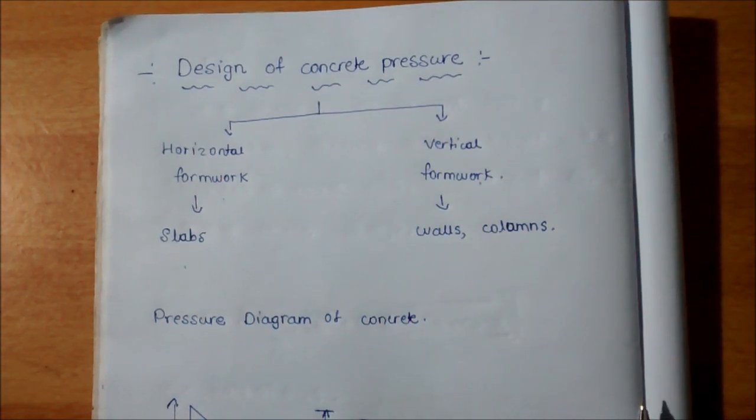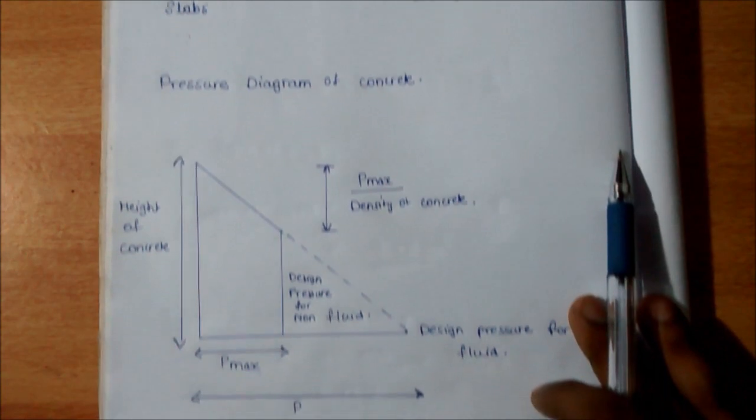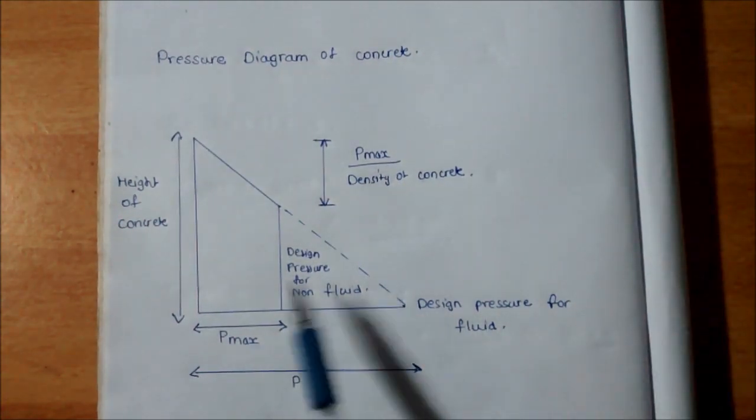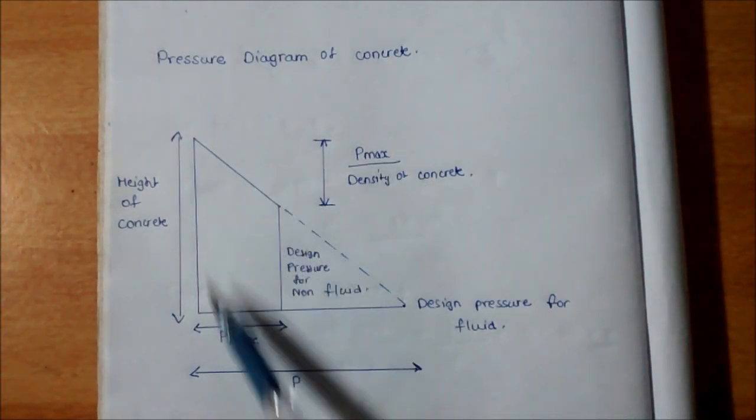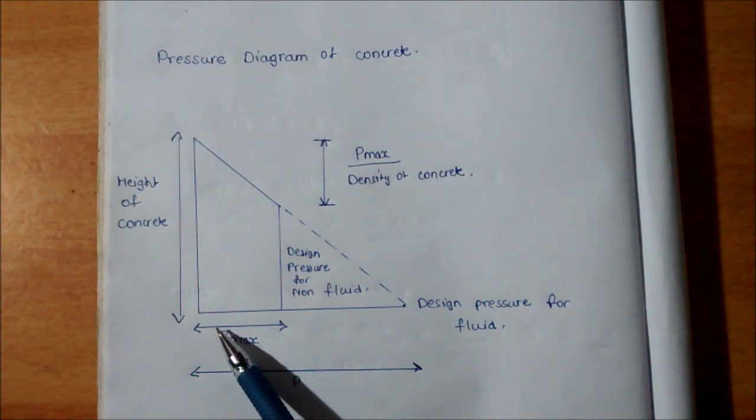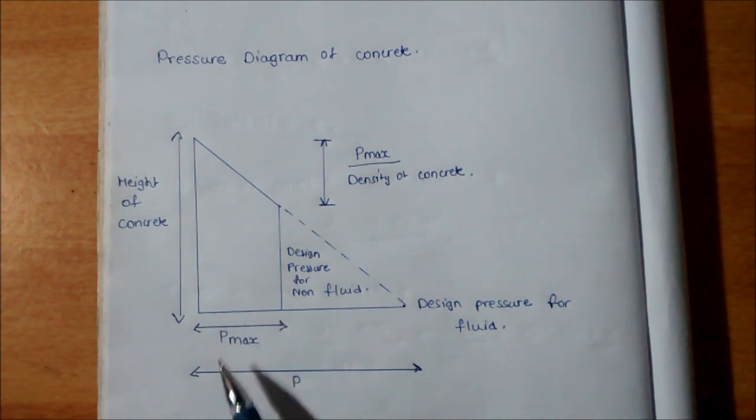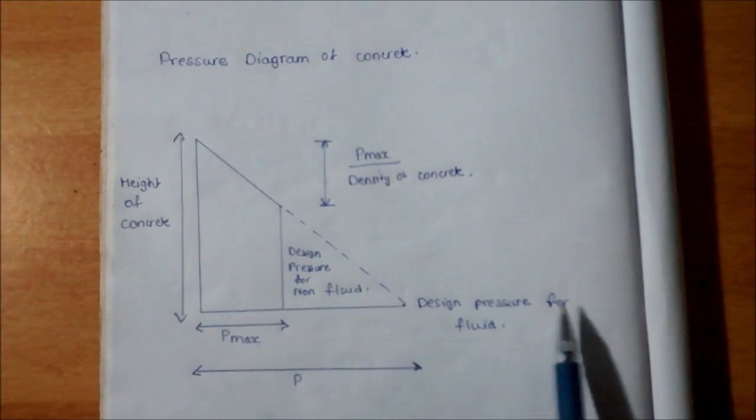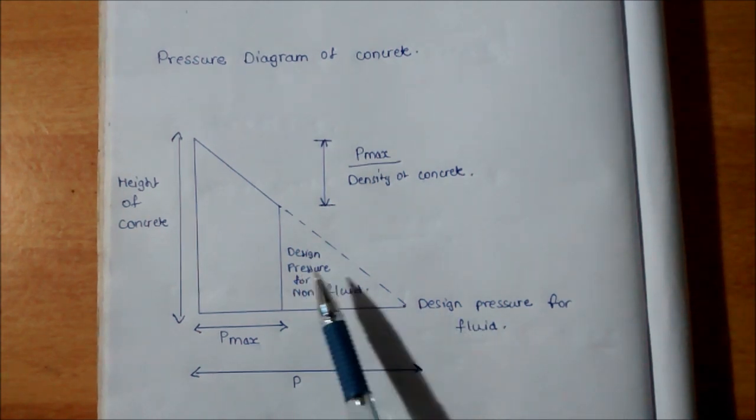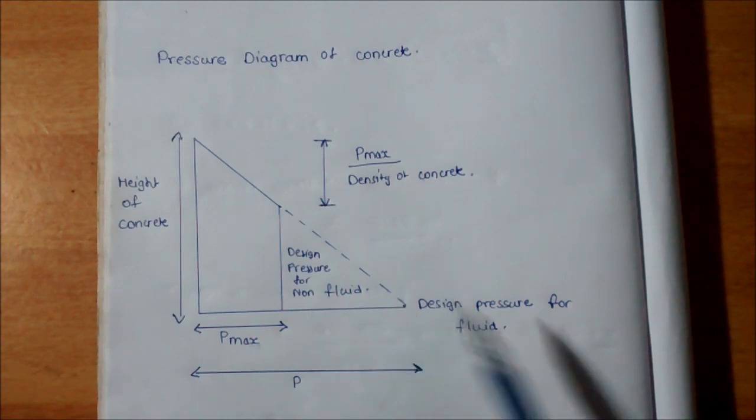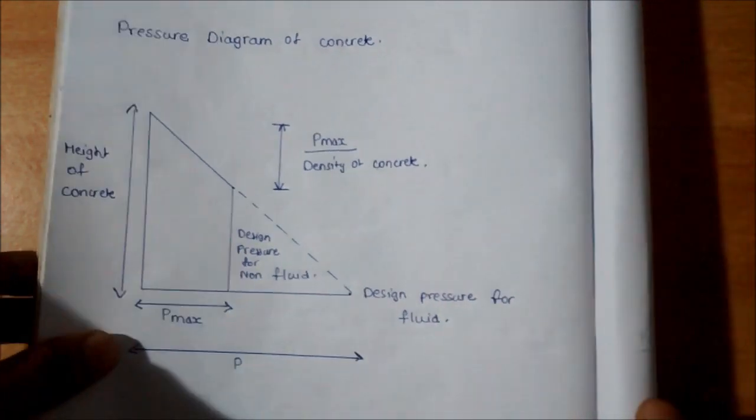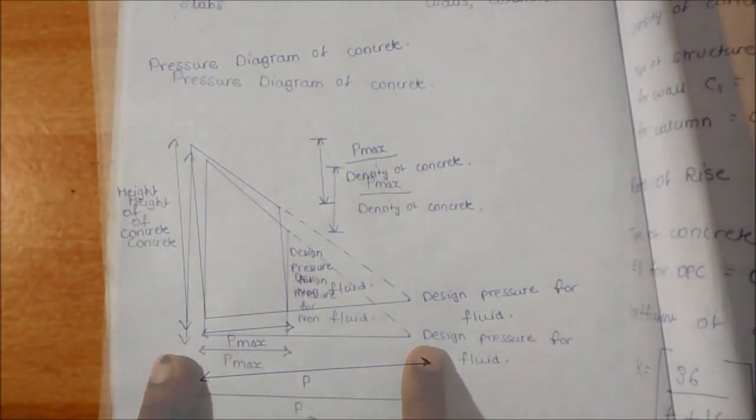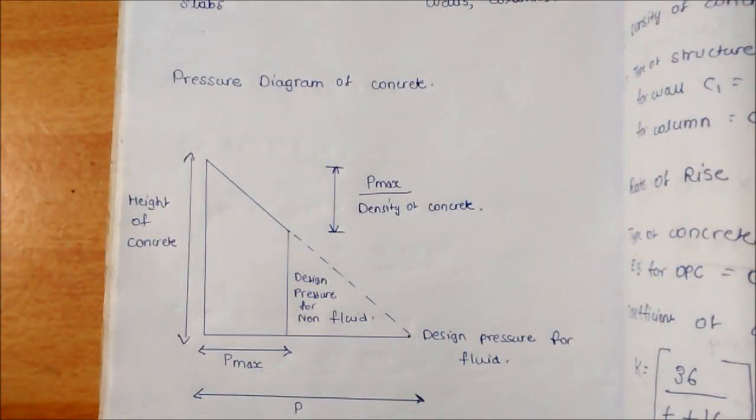First of all, we have to understand what is the pressure diagram of concrete. The pressure diagram comes like this: this is the height of the concrete element, and this is P max. This is P, and this pressure indicates the design pressure for the fluid and design pressure for the non-fluids.